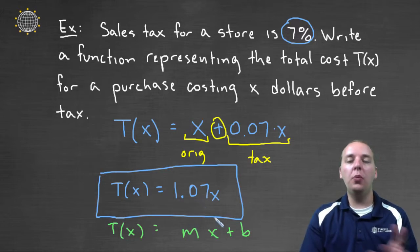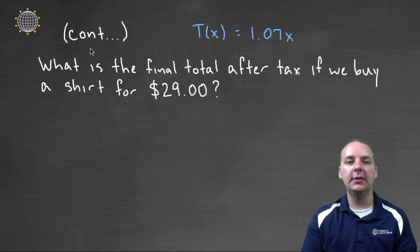Alright now, what would we use this for? Well I actually have a part B that I want to do as well. So this is continued on the next page here. The next question says, what is the final total, the final price that we have to pay after tax if we buy a shirt for twenty nine dollars?